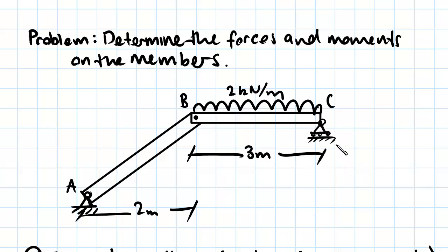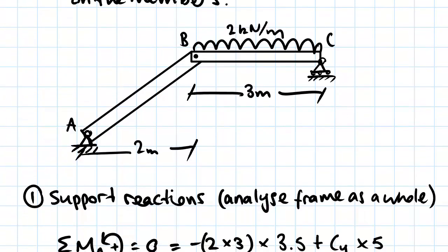And there is one uniformly distributed load acting on the member B to C. So the way we would begin a problem like this is we're going to first of all find the support reactions.